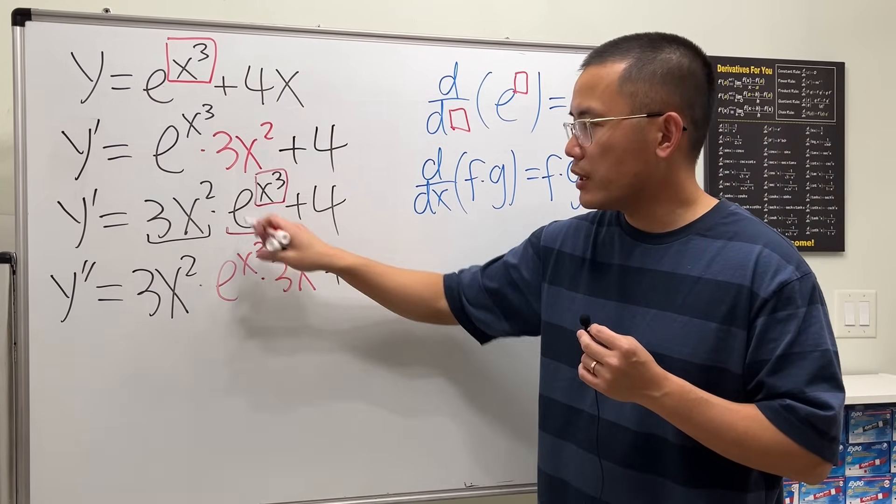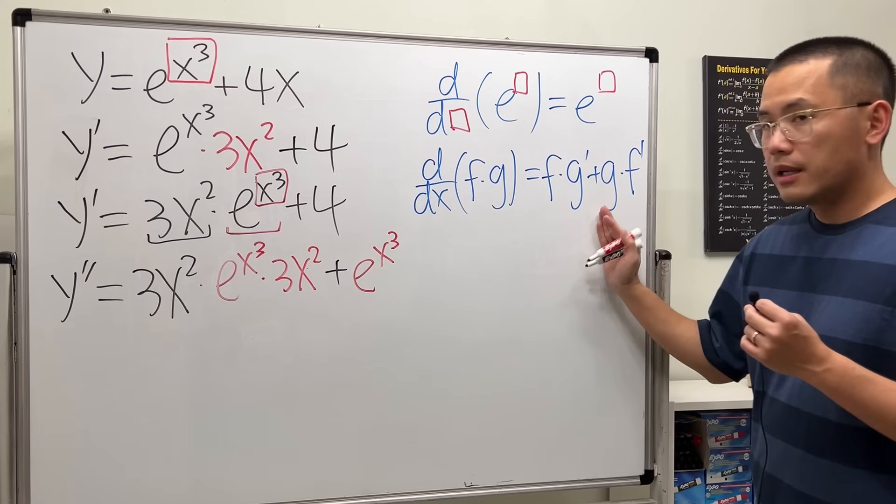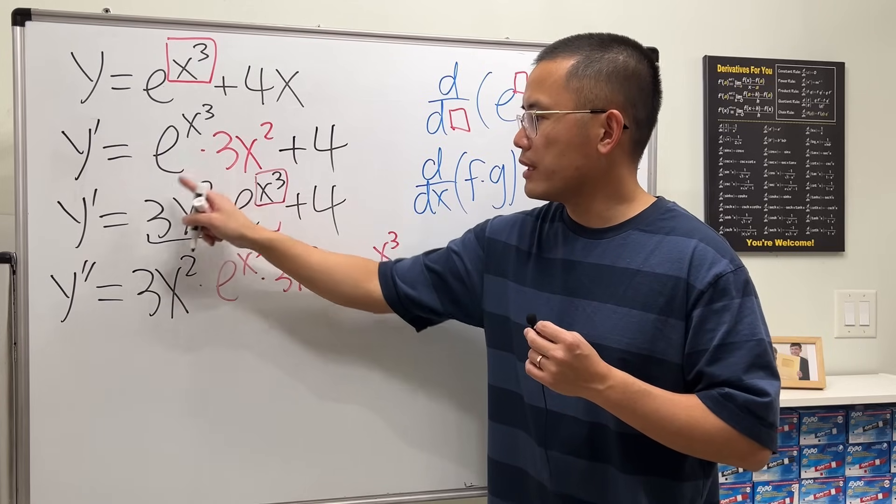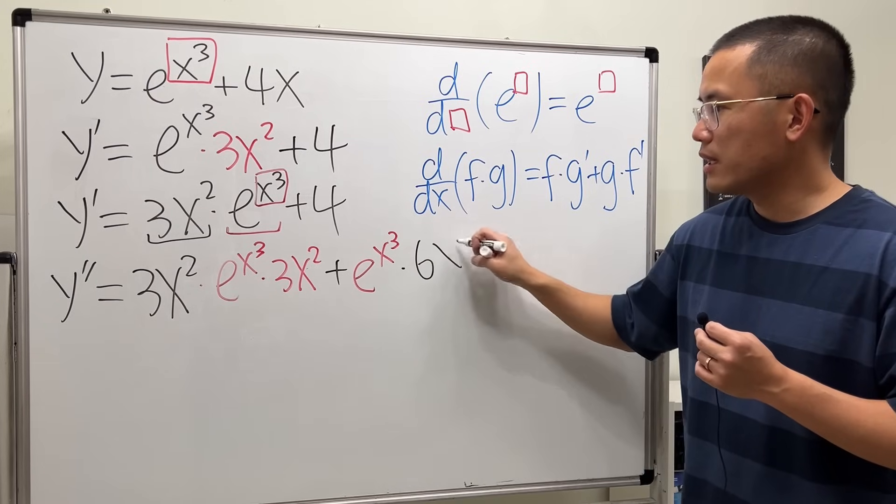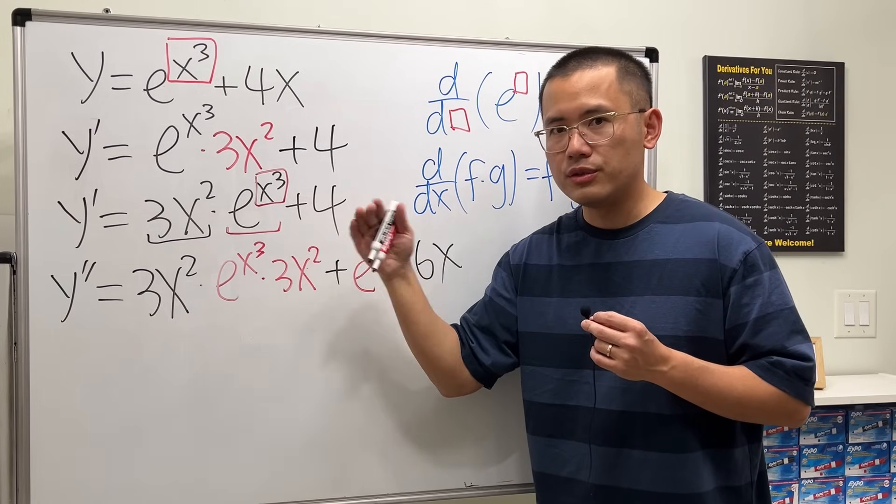times the derivative of the first. Use the power rule, bring that down minus one, so 2 times 3 is 6, and then we have x to the first power. Finally, the derivative of a constant is just zero. At the end I'm going to multiply this and that